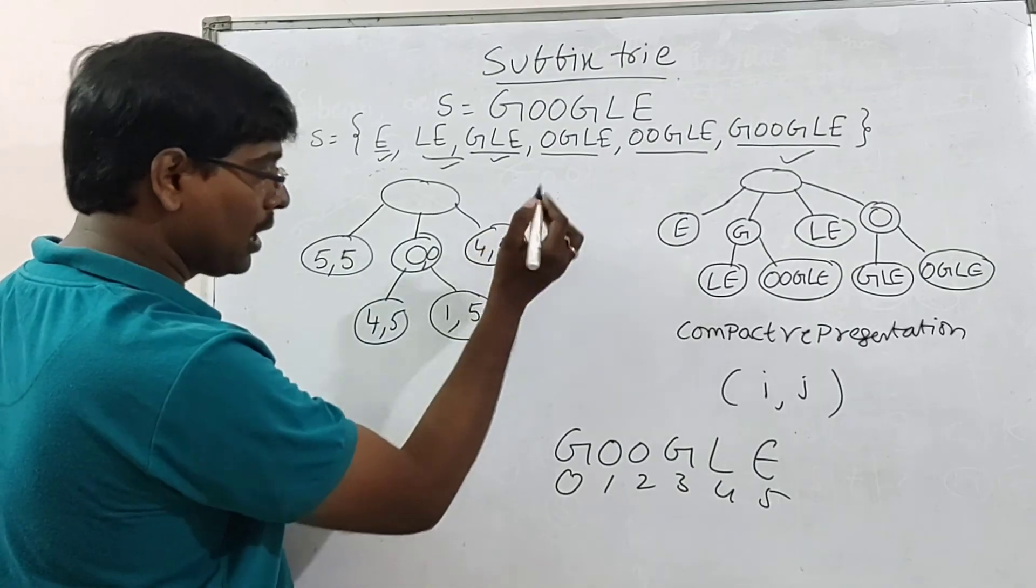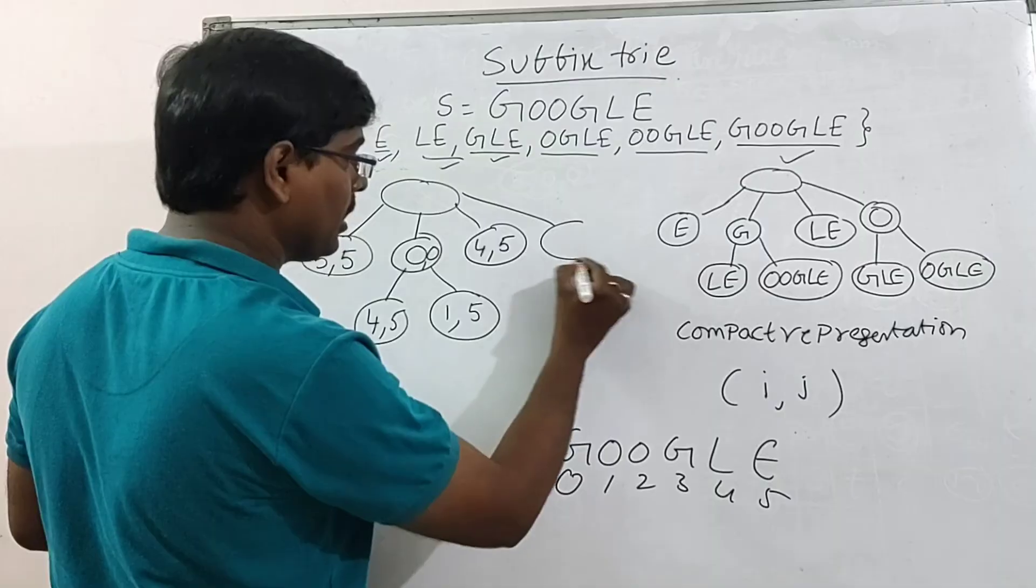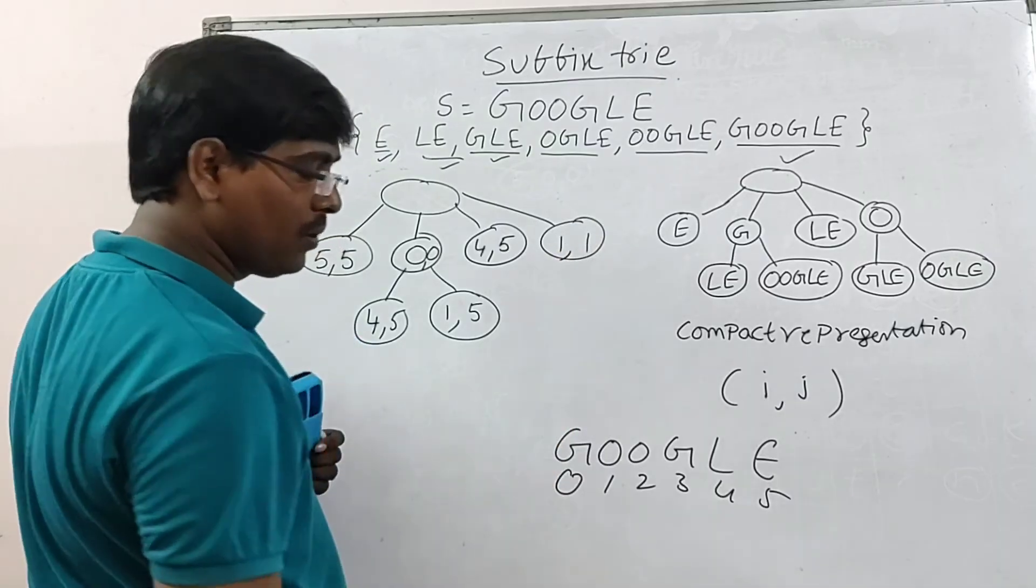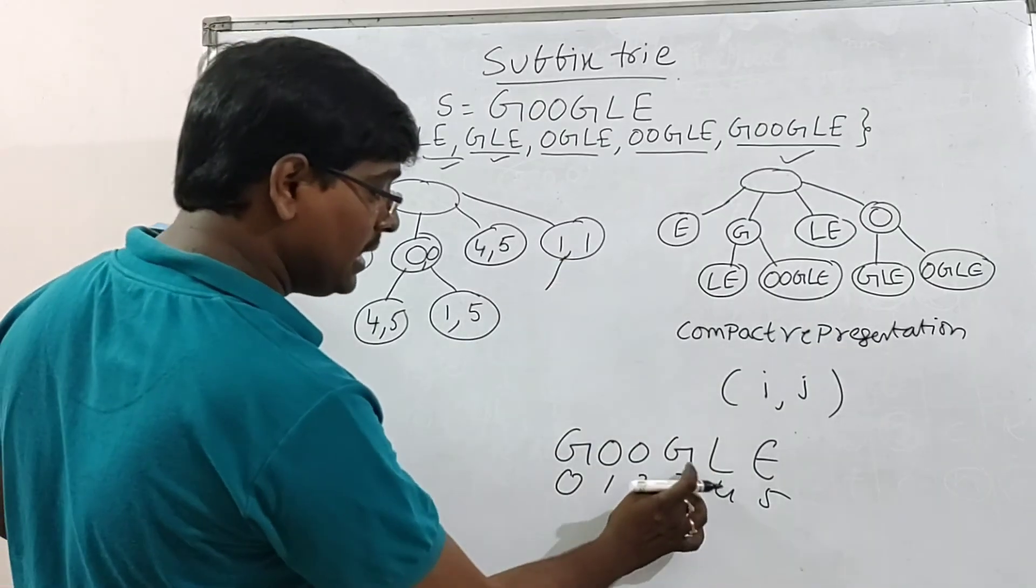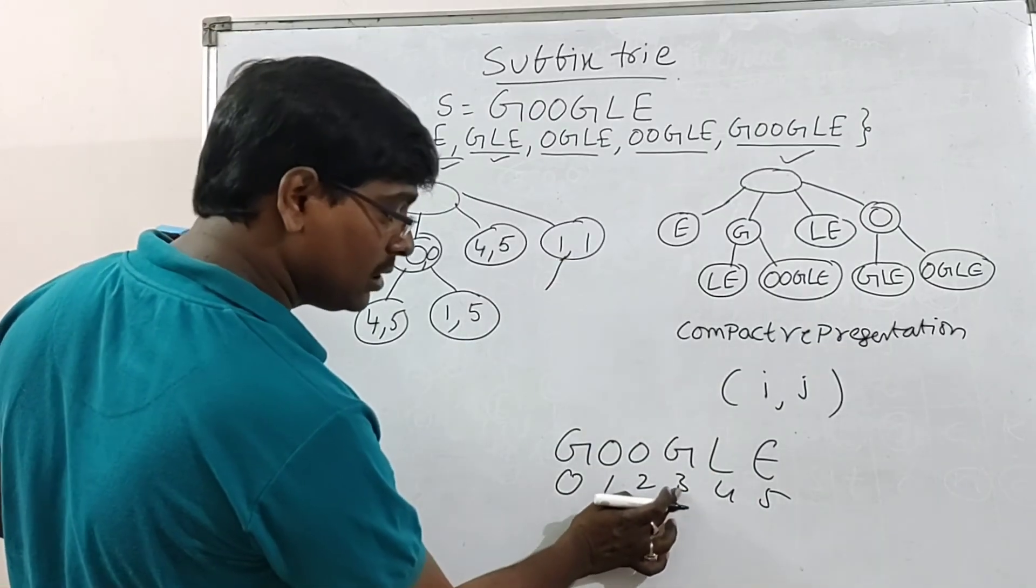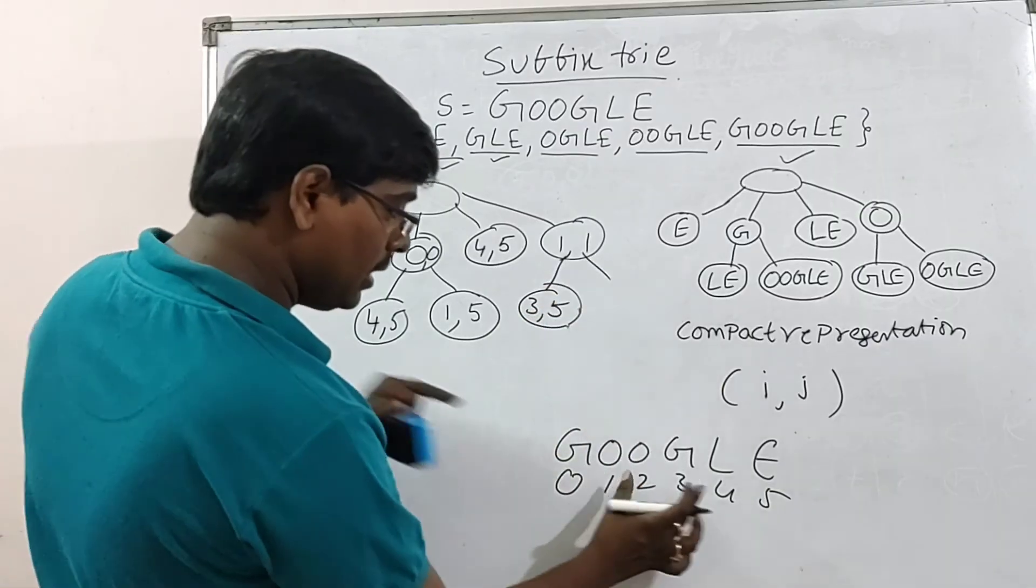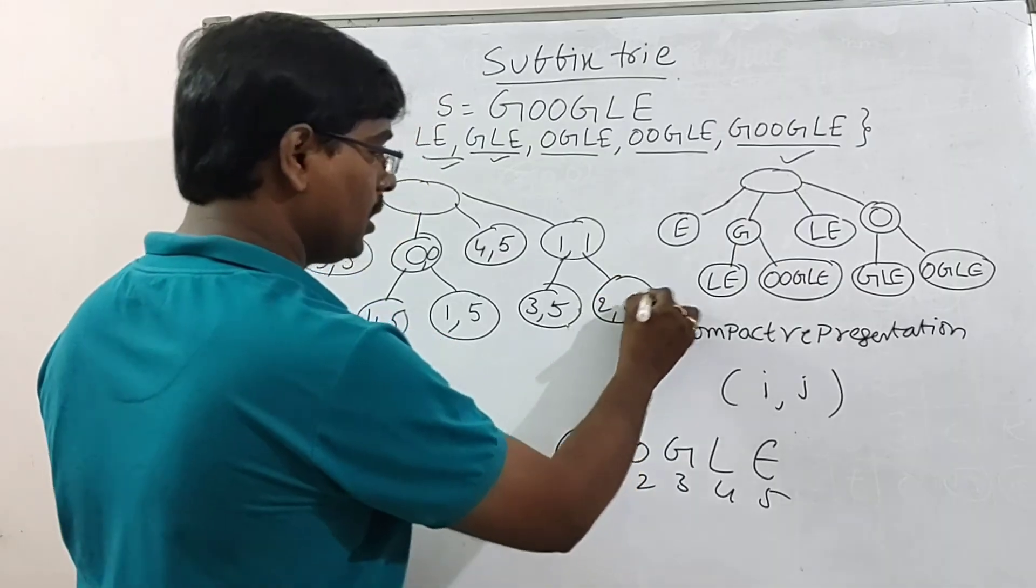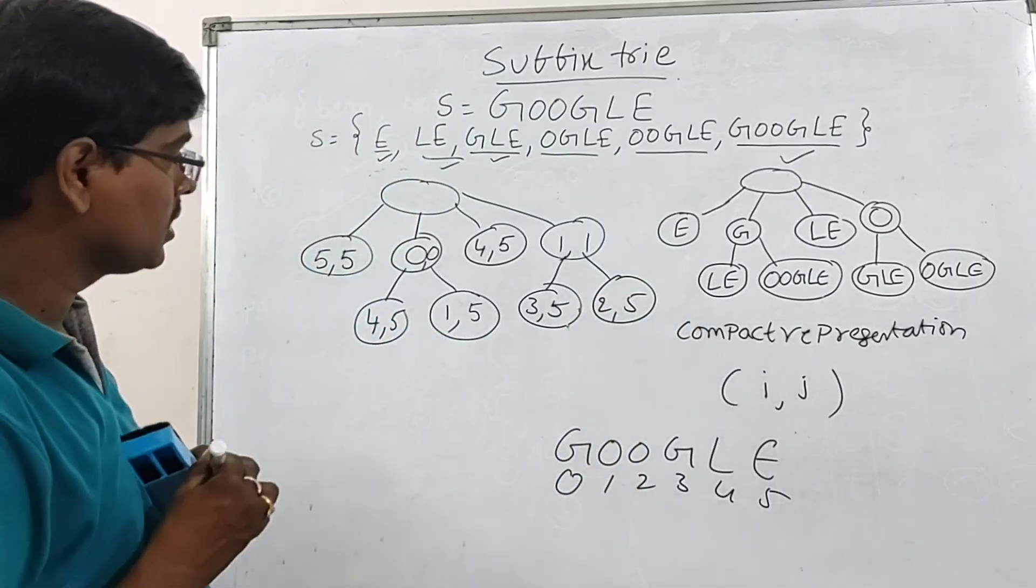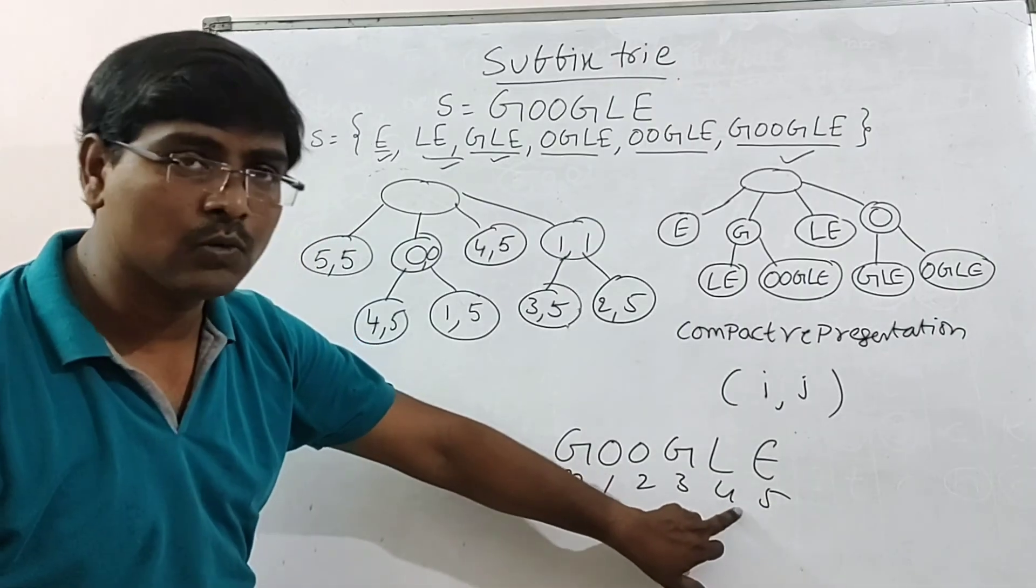L-E, 4, 5. Next to O. Take any one. That is not a problem. 1, 1. If it is repeated, you can take anything. I will show you also. G-L-E, 3 and 5. And finally, O-G-L-E, 2, 5. No problem. You can take anything index.